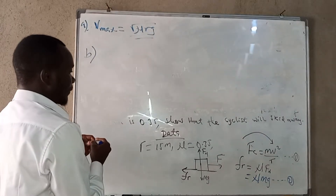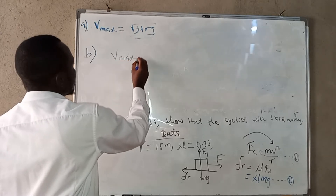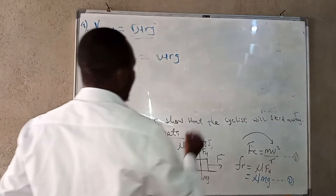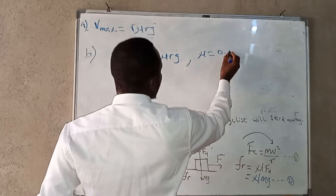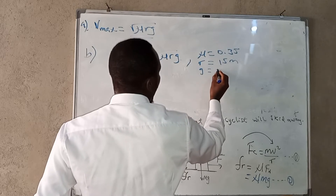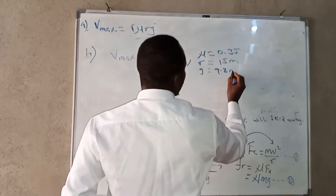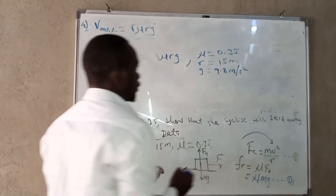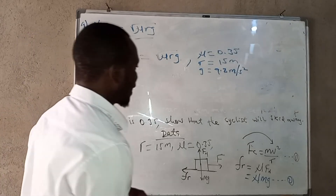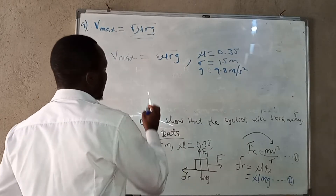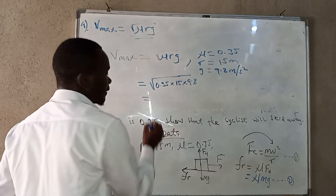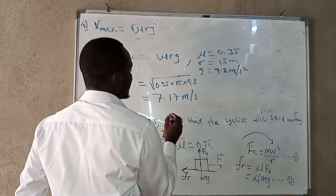For part b, we have v_max equals the square root of mu times r times g, where mu equals 0.35, r equals 15 meters, and g equals 9.8 meters per second squared. Plugging in these values, we get v_max equals approximately 7.17 meters per second.